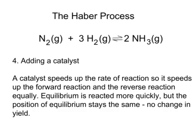Finally, what's the effect on yield of adding a catalyst? A catalyst speeds up a reaction, so it will speed up the forward reaction, but it will speed up the reverse reaction equally. Therefore, although equilibrium is reached more quickly, there's no change in the position of equilibrium, because at equilibrium the rate of the forward reaction and the rate of the reverse reaction are the same.